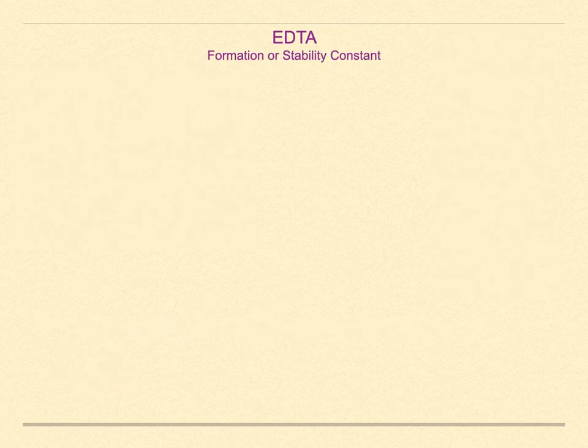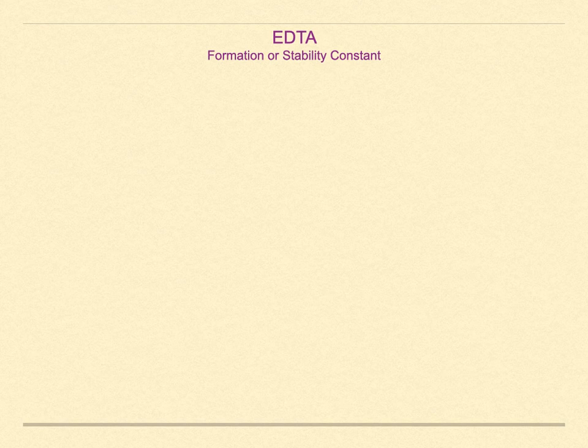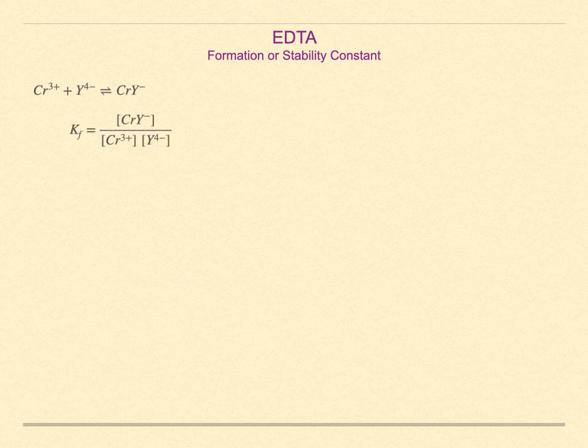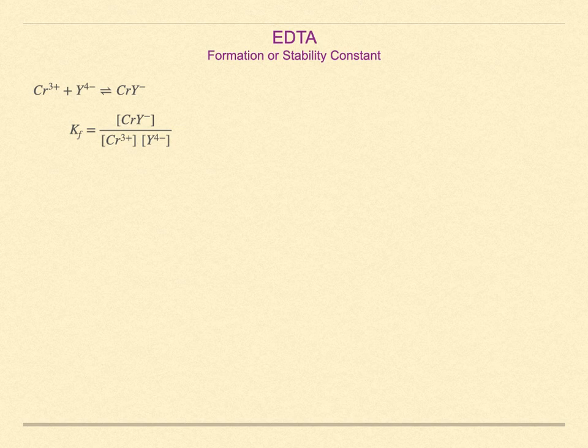A metal ligand equilibrium constant is sometimes called a formation or stability constant. In the case of the Y4- form of EDTA reacting with, for example, chromium 3+ ion, we would write this down. Remember that in most instances, we are using the shorthand notation of Y for the EDTA molecule, and that works most of the time.